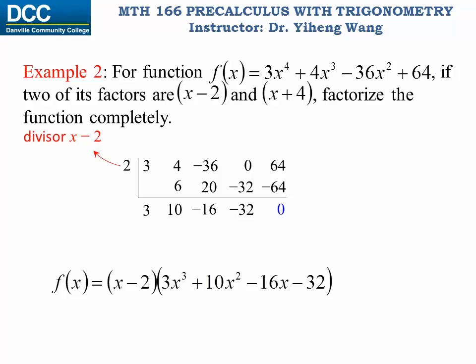Because we know another factor x plus four, we simply continue with another synthetic division. Draw the symbol again. Factor x plus four indicates a zero of negative four, which goes here. Write down the coefficient three; multiplied by negative four, that is negative twelve. Ten plus negative twelve is negative two; multiplied by negative four, positive eight. Negative sixteen plus eight is negative eight; multiplied by negative four, positive thirty-two. Negative thirty-two plus thirty-two gives a remainder of zero, indicating exact division.